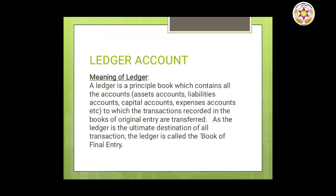LF means Ledger Folio. The transactions entered in the journal are later on posted to the ledger. In the debit column, the amount to be debited is entered, and in the credit column, the amount to be credited is shown. So this is journal entry.